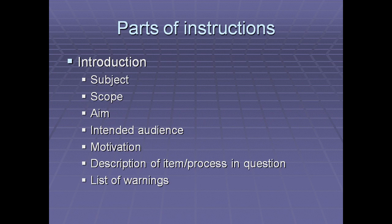The intended audience is your opportunity to state who the instructions are for — for example, 'the intended audience for these instructions are first-time users of Microsoft Office.' Next is motivation, which is important because we want people to actually read and follow the instructions. The motivation tells them why they should. For our example, it might be: 'Use these instructions to quickly and easily install Microsoft Office so that you can begin using it right away.'